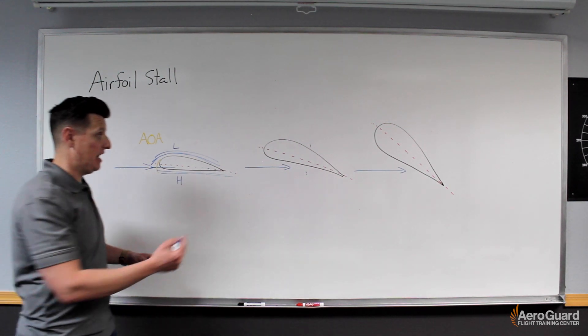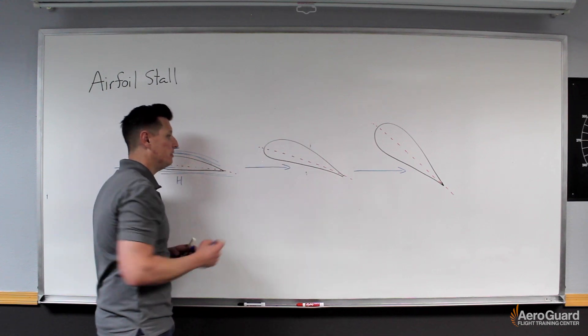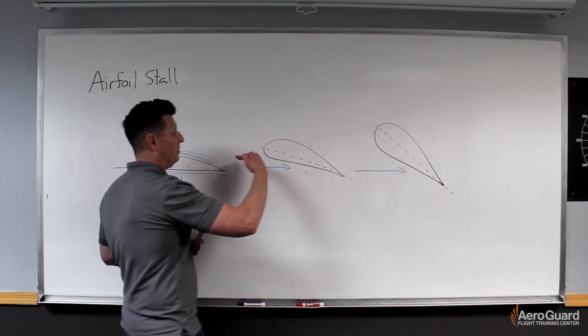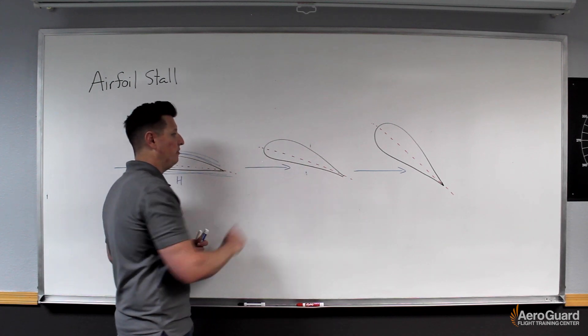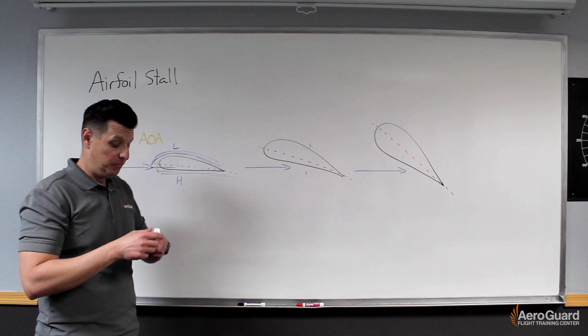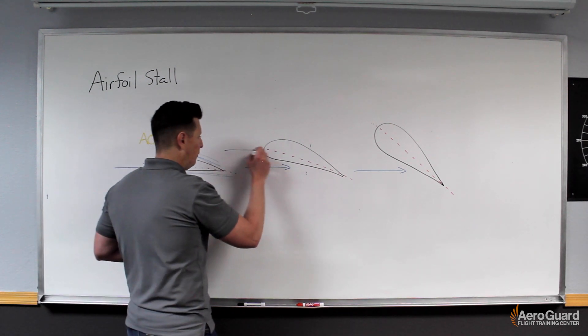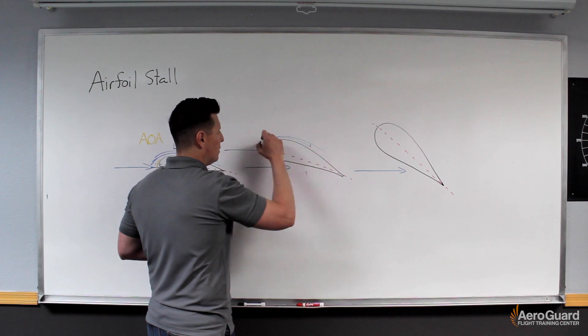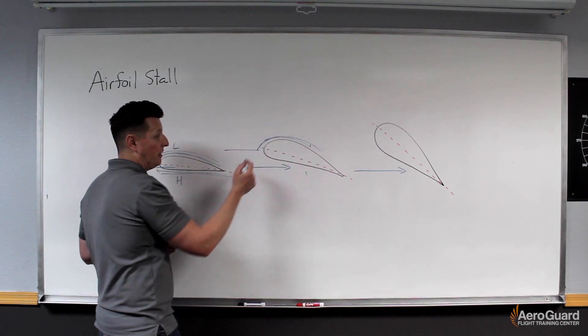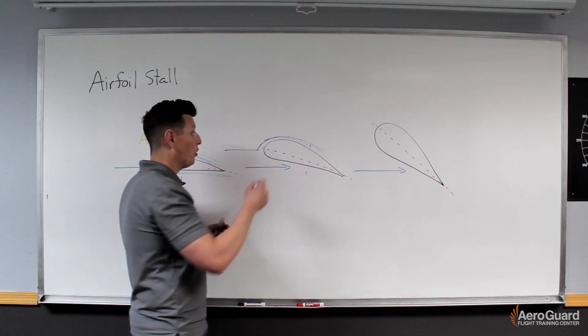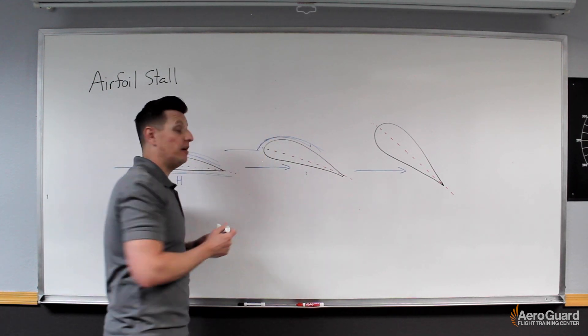As I increase my angle of attack, as we see in this image here, the chord line and this relative wind, the angle is greater. That larger angle of attack means that now this airflow is going to create an even tighter venturi effect across the upper camber of the wing.